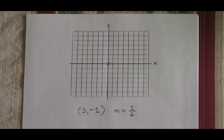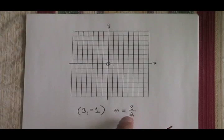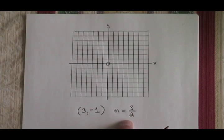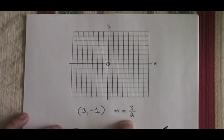The rise over run trick is something that allows us to graph a straight line so long as we have a starting point and the slope in the form of a fraction. It's a very easy trick, so we'll do several examples to make sure that we're ready to deal with it no matter how the question is asked.